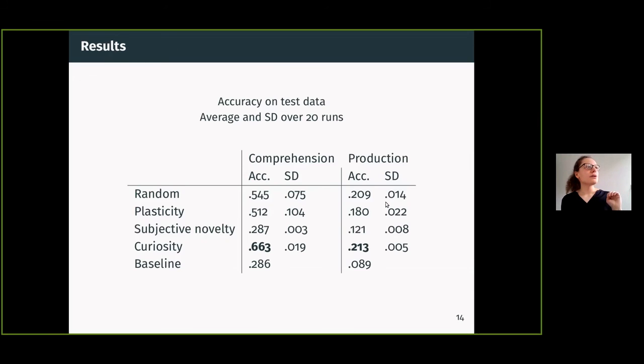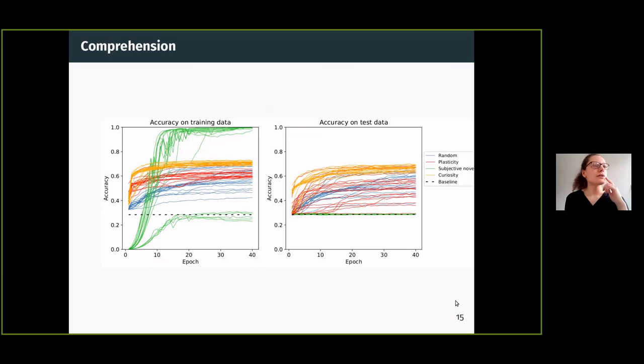I wanted to show you these plots which are the results after each epoch of training for all of the models that we trained. We trained 20 models in every condition. These are on training data after each epoch of training. Let's first look at the curious models—curious models are the orange ones. As you can see, they both have the highest accuracy in training and on test data.